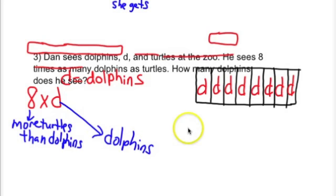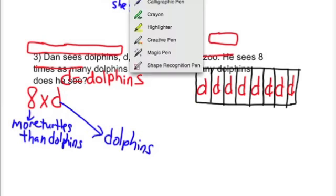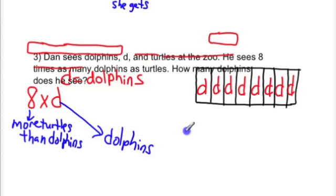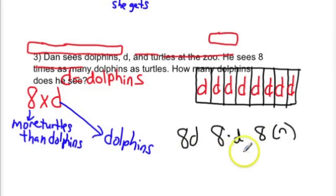We also talked about the fact that we could have written the eight times D in different ways. We could have written it this way, 8D. We talked about writing it like this, eight times D represented this way. We also talked about that we were able to put it in parentheses and that all of these would represent multiplication.